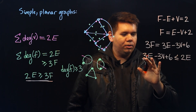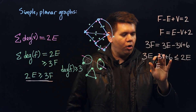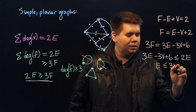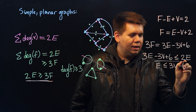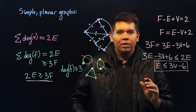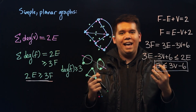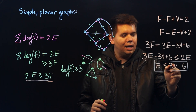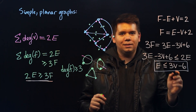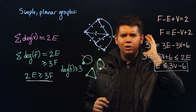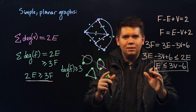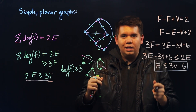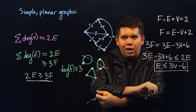Now let's simplify. Subtract two times the number of edges, move over the vertex and constant terms, and we find that in a simple planar graph, there is a bound on how many edges you have. The number of edges is bounded above by three times the number of vertices minus six. Your intuition here should be: if you have a fixed number of vertices, you can't have too many edges, because if you put too many edges, they'll have to start crossing each other.